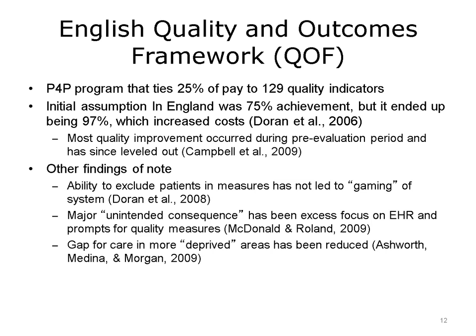The Accountable Care Organization, or ACO, is one model in the United States that supports P4P based on the results of patient care outcomes demonstrated by all providers across the patient care continuum. Although some have failed, ACOs have explored ways to change the current provider reimbursement methodology under health care payment reform. The English Quality and Outcomes Framework is a P4P program that ties 25% of the pay for general practitioners in England to their performance on 129 quality indicators. The initial assumption was that there would be about 75% achievement, but there actually has been about 97% achievement, which has ended up increasing the cost of the program. Another finding is that most of the quality improvement occurred as the program was starting and has since leveled off.